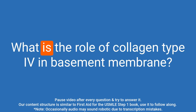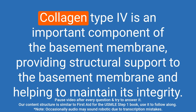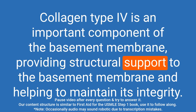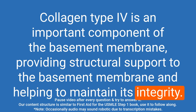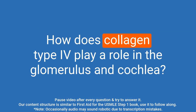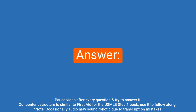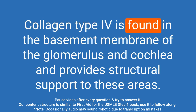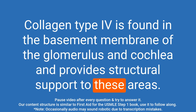Question: What is the role of collagen type IV in the basement membrane? Answer: Collagen type IV is an important component of the basement membrane, providing structural support and helping to maintain its integrity. Question: How does collagen type IV play a role in the glomerulus and cochlea? Answer: Collagen type IV is found in the basement membrane of the glomerulus and cochlea and provides structural support to these areas.